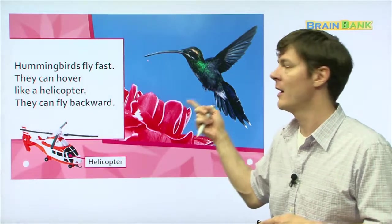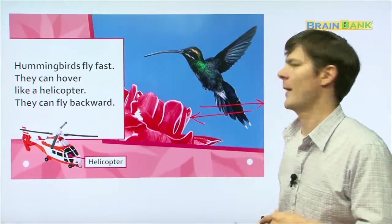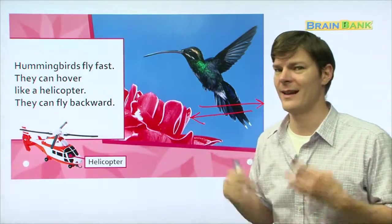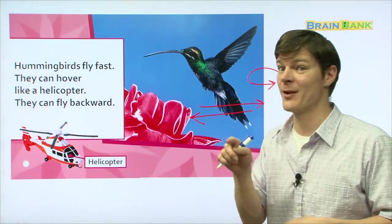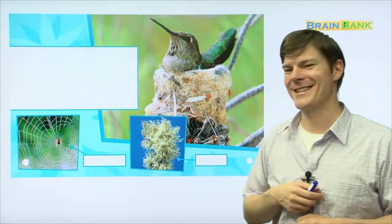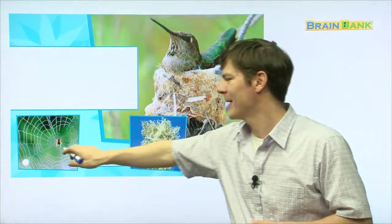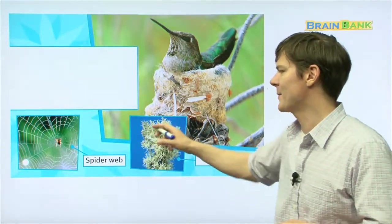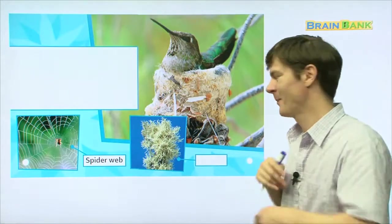So just like a helicopter, hummingbirds can fly this direction or they can fly this direction. I think they're the only birds that can go both backwards and forwards. That's amazing. Other birds have to turn around to go backwards. But not the hummingbird. They can fly backwards. Pretty cool.